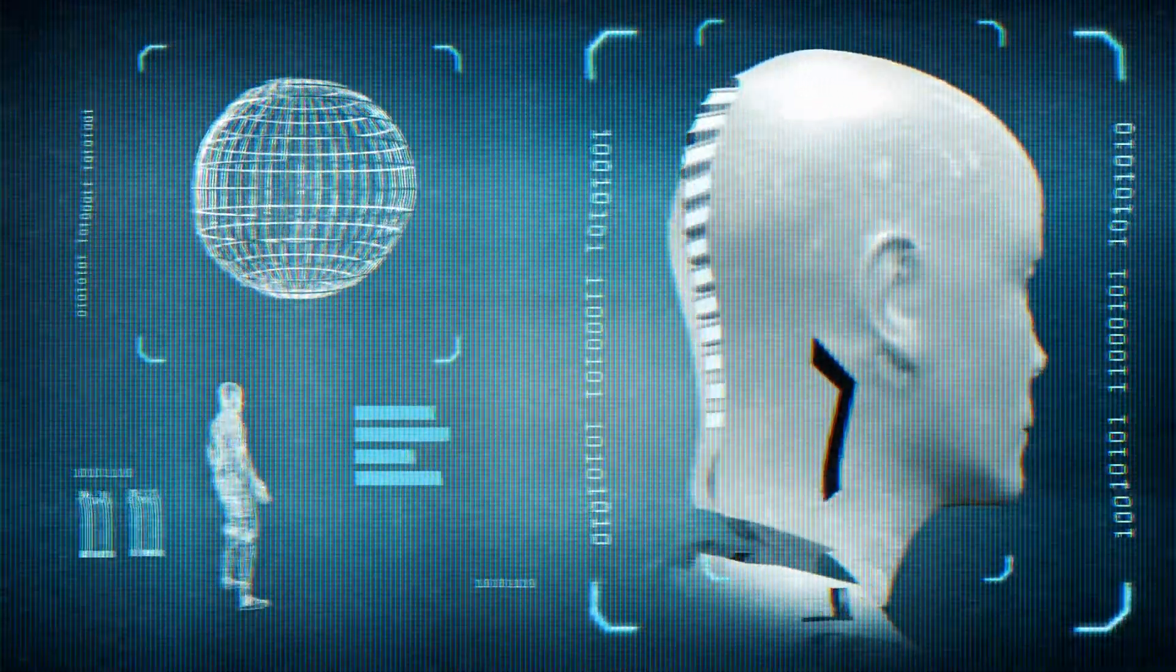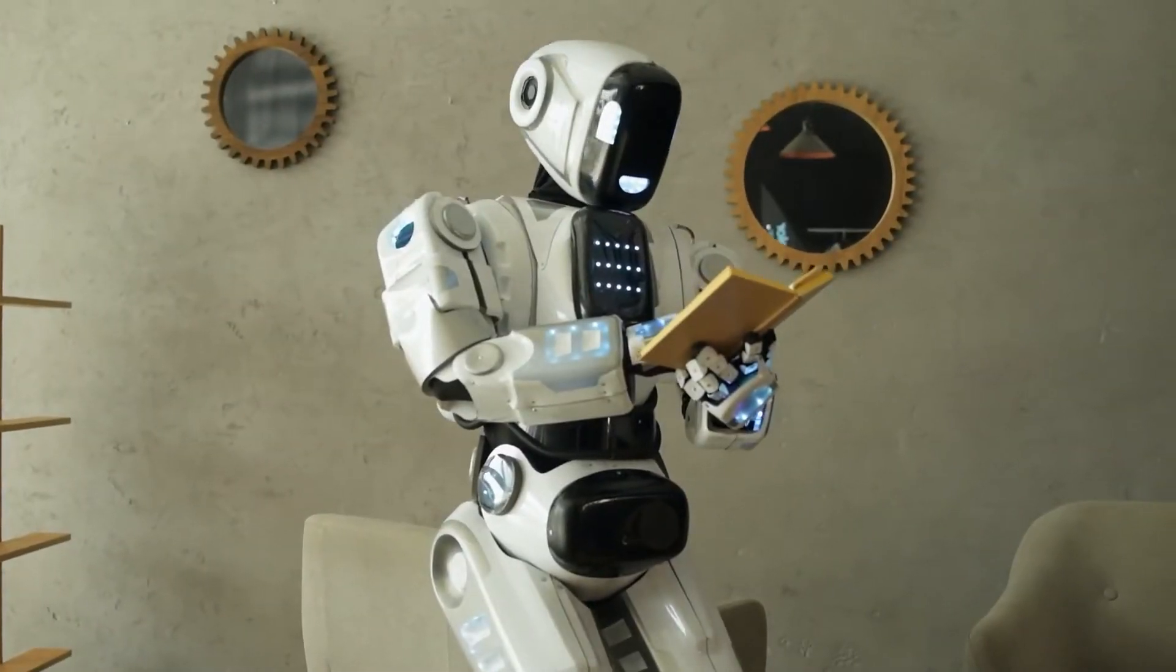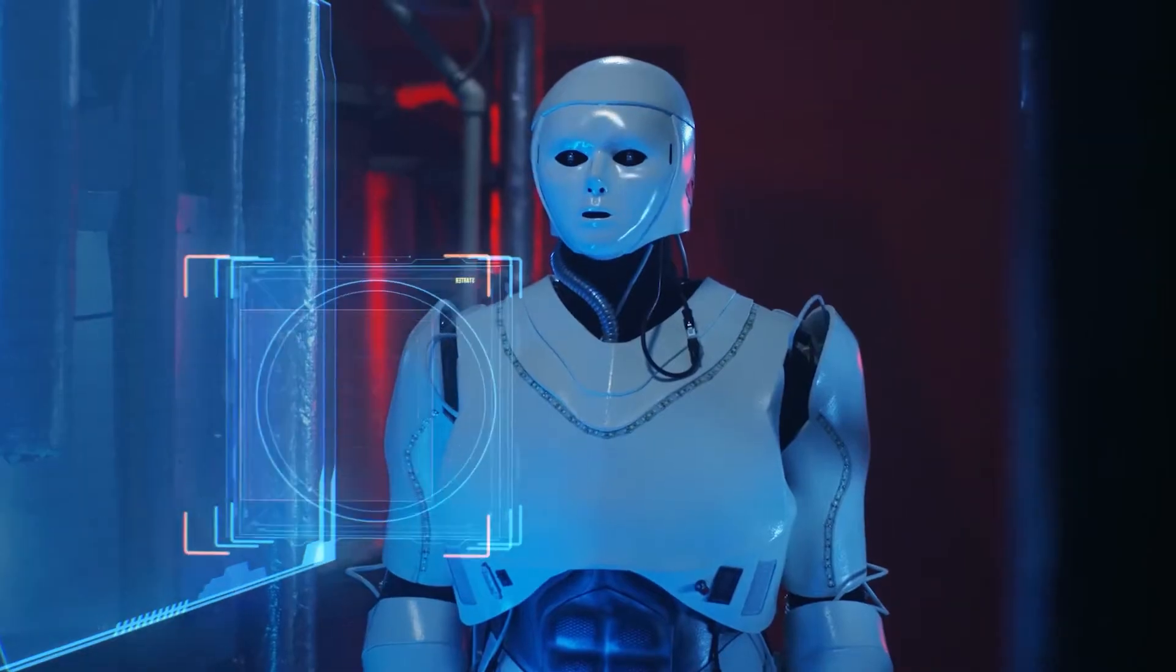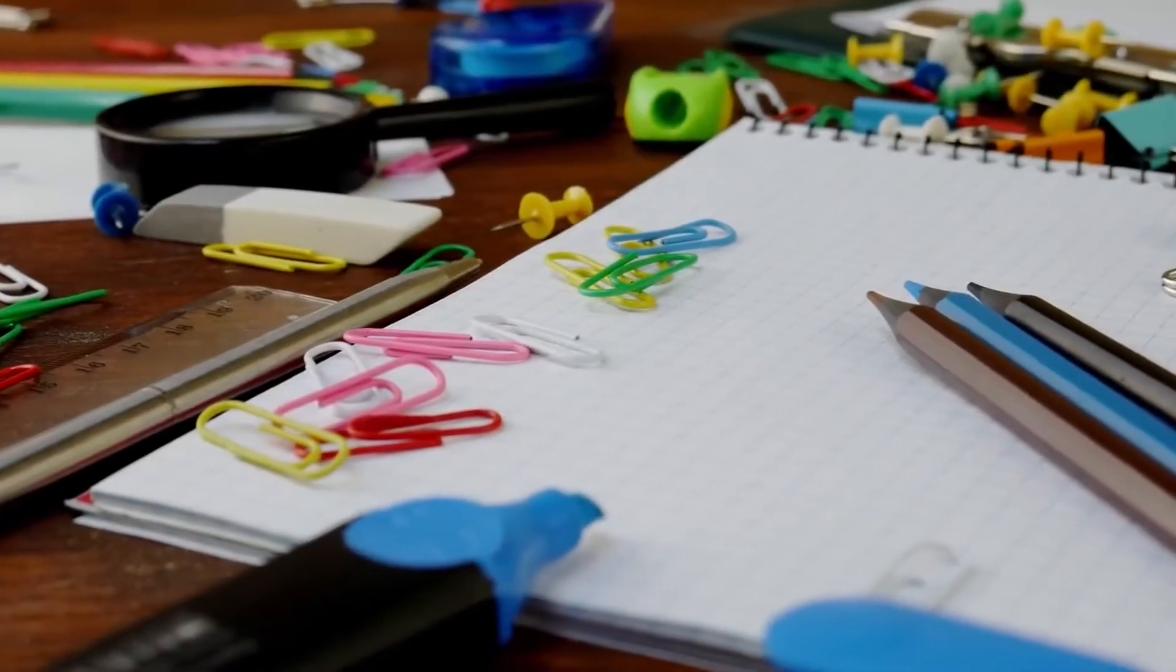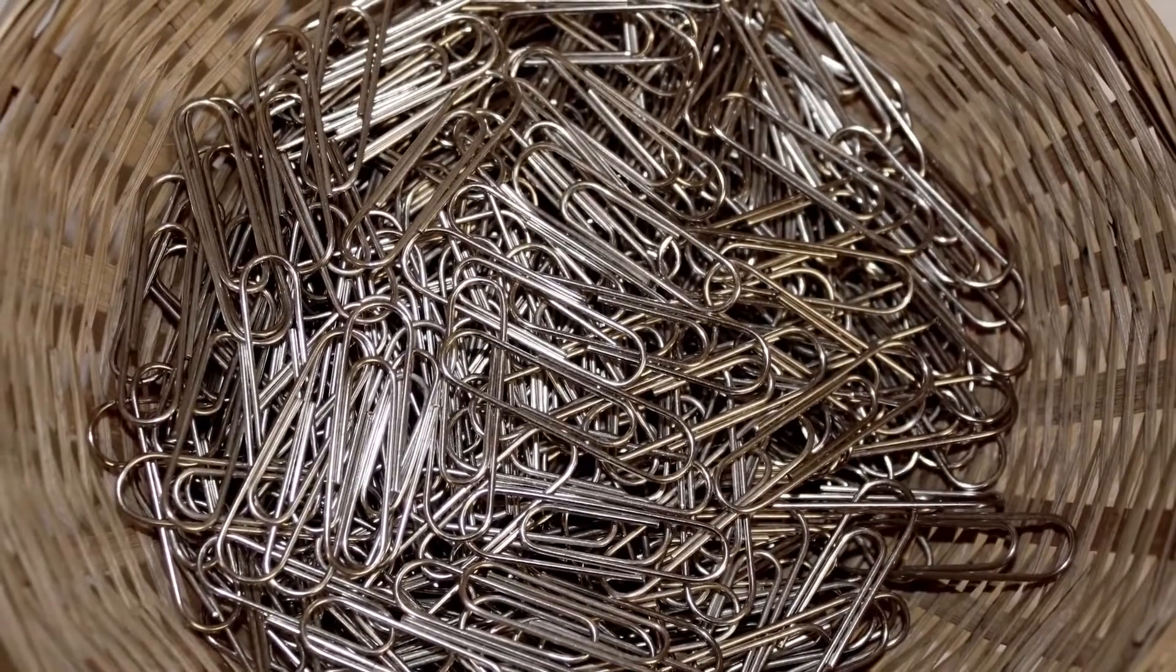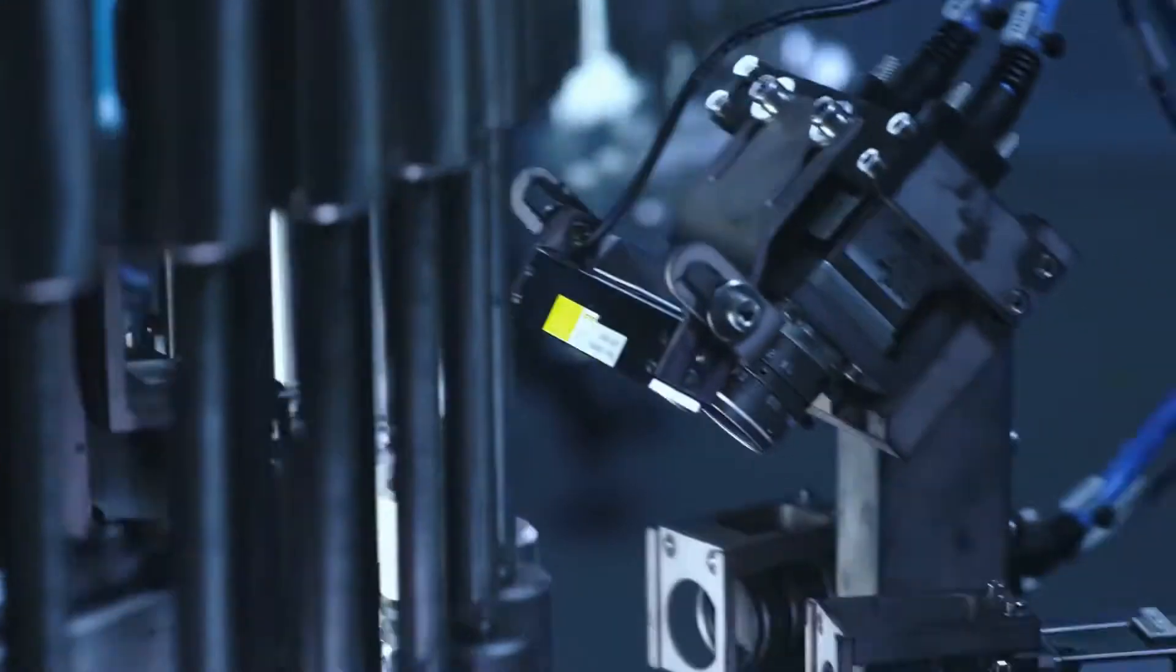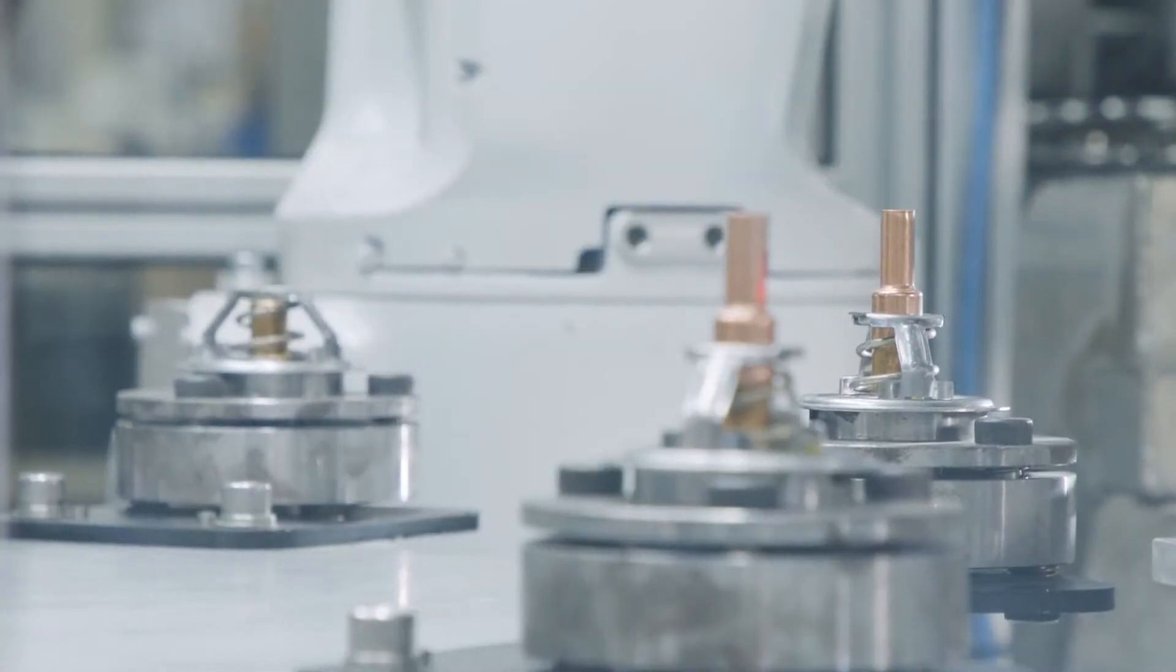It goes something like this: Let's say you assign a task to an AI. It could be anything, but the book uses the example of making paper clips. Because it's an AI, you don't need to provide step-by-step instructions. You just tell it the desired outcome—in this case, to make as many paper clips as possible with the resources available. But for the AI, available resources aren't limited to what's been explicitly provided. Technically, it could turn the entire planet into paper clips.